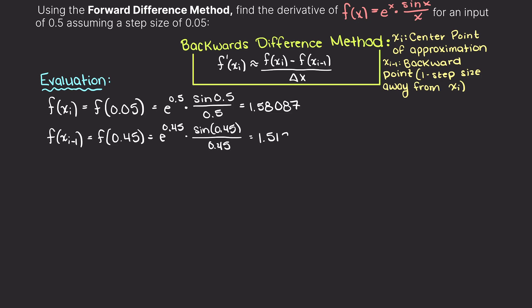Now, we can plug these values into our backwards difference equation and we find that the derivative at 0.5 of this function is approximately 1.299.